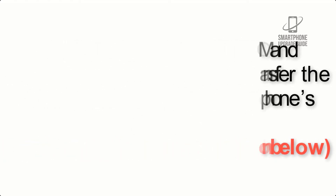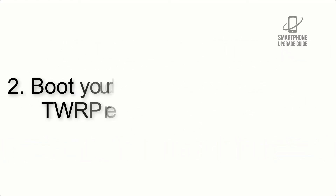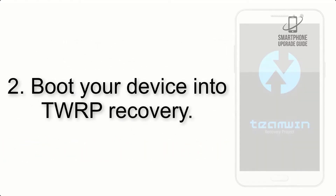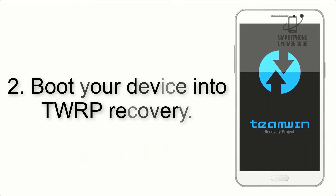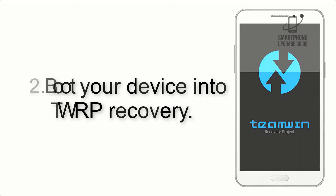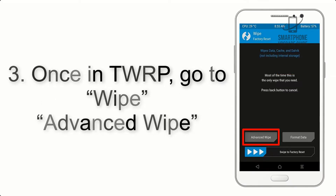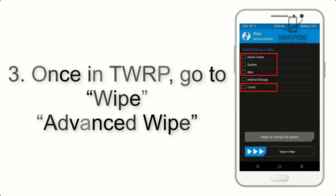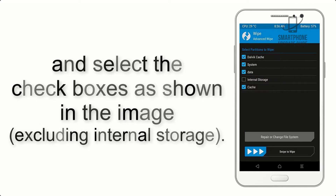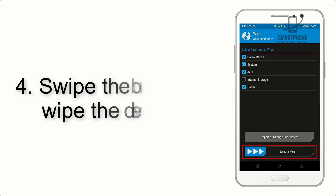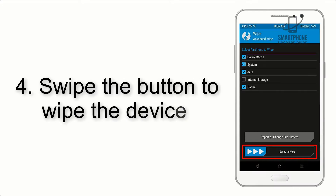Step 2: Boot your device into TWRP recovery. Once in TWRP, click on wipe, then Advanced Wipe, and select the checkboxes as shown in the image, excluding internal storage.